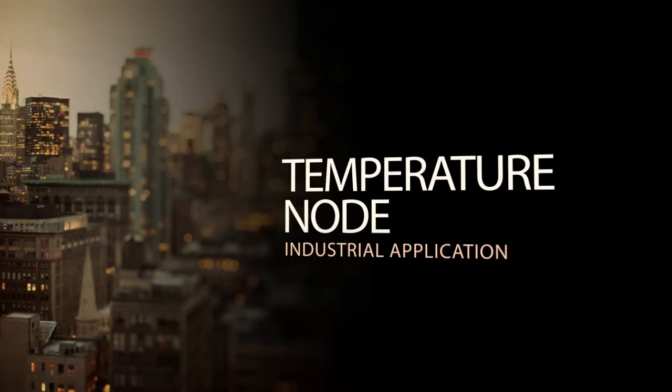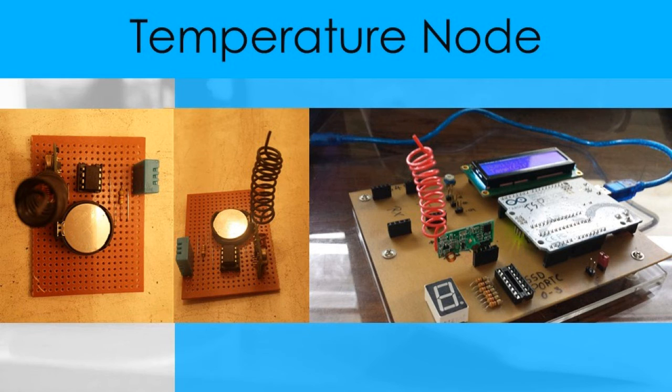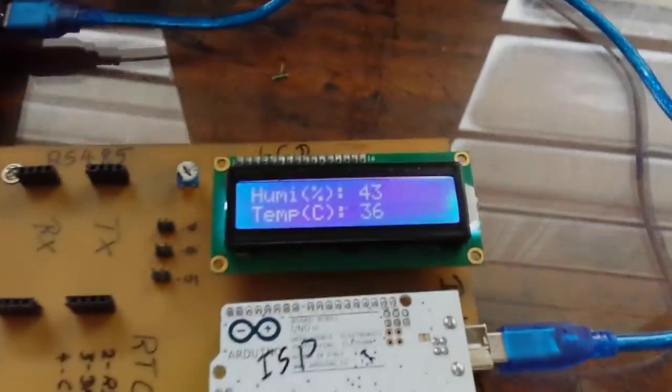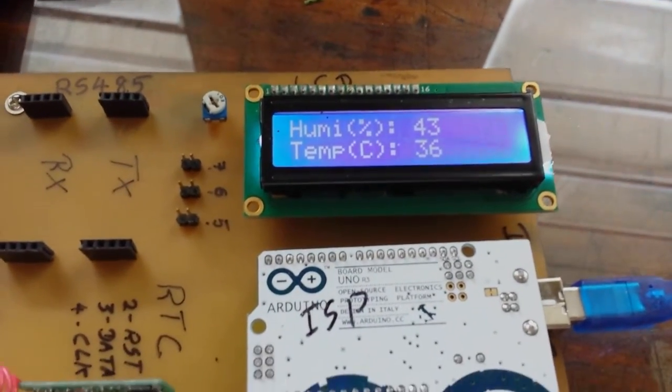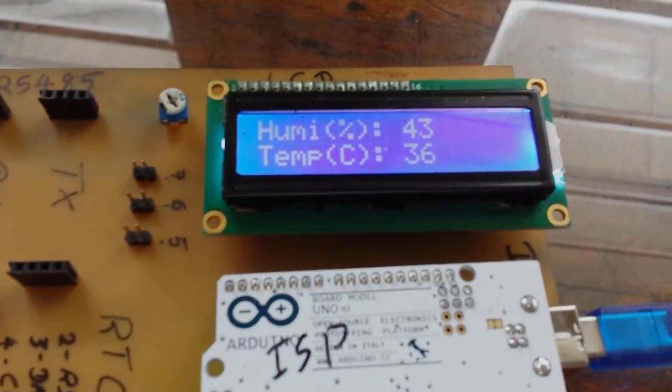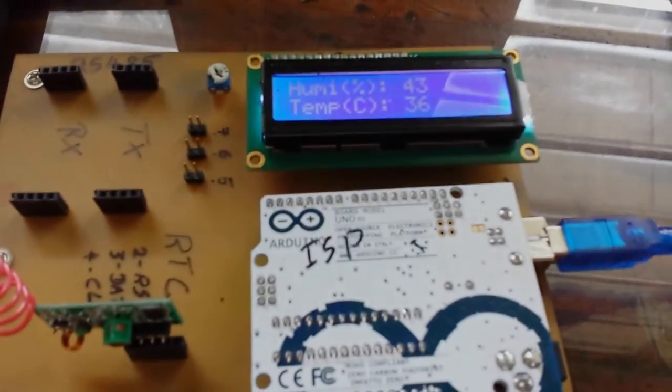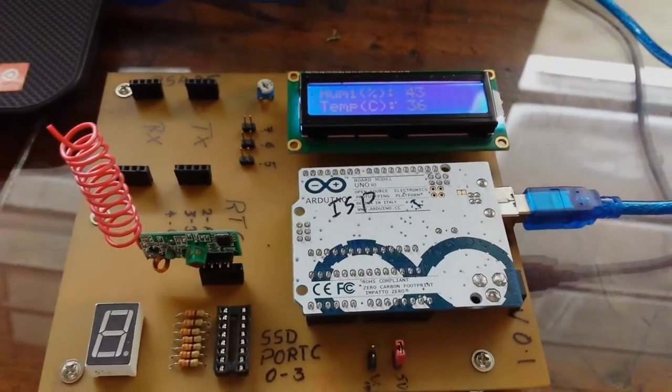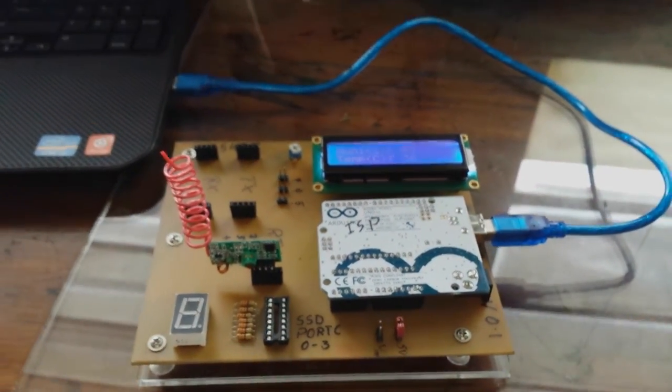As we have succeeded in the power harvesting, we thought of implementing that to a practical application. So we thought of a temperature node that is powered up by our energy harvester. And we designed a module that could read the temperature and the humidity of the surrounding and that was powered up by our RF energy harvester. Then that signal was transmitted to the local station more than 10 meters away.